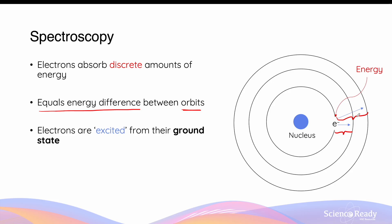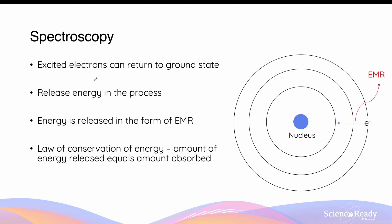When electrons move to a higher orbit, this process is known as excitation, because the electrons are excited by absorbing this energy as they move from the ground state — that is, the normal energy level — to a much higher excited state. Excited electrons do not stay in the excited energy levels forever. They will eventually return to the ground state by releasing energy in the form of electromagnetic radiation, EMR. The energy that they emit also equals the difference in the two orbit energy levels.